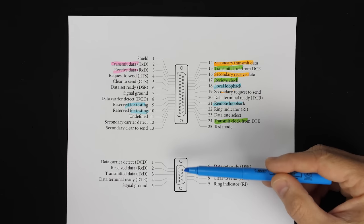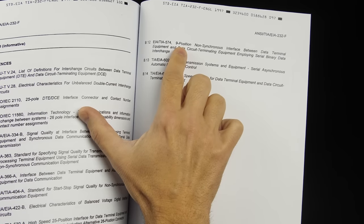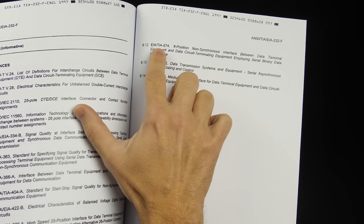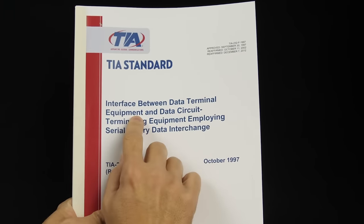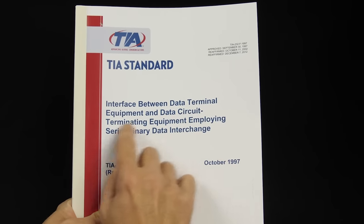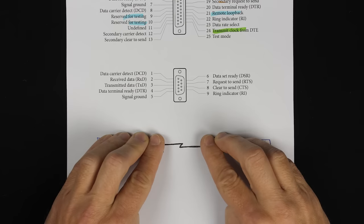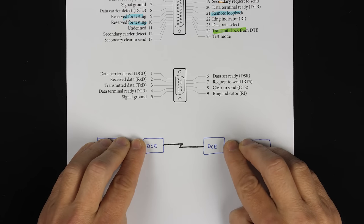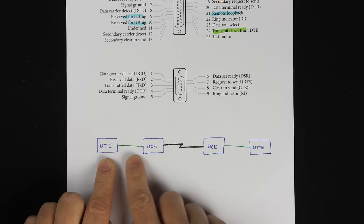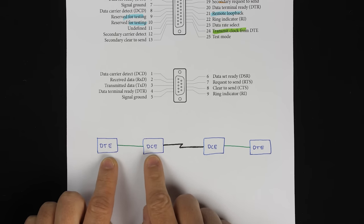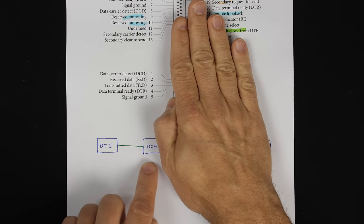Most of the signals on the 9-pin connectors aren't strictly necessary either, and that 9-pin connector was eventually standardized as TIA-574. RS-232 is an interface between data terminal equipment, or DTE, on one end, and data circuit terminating equipment, or DCE, on the other. The idea is you'd have a communication circuit — a phone line, a leased line, something like that — and on each end you'd have DCE, like a modem, connected to a computer, which is the DTE. The RS-232 standard covers what's going on physically and electrically between these two devices.